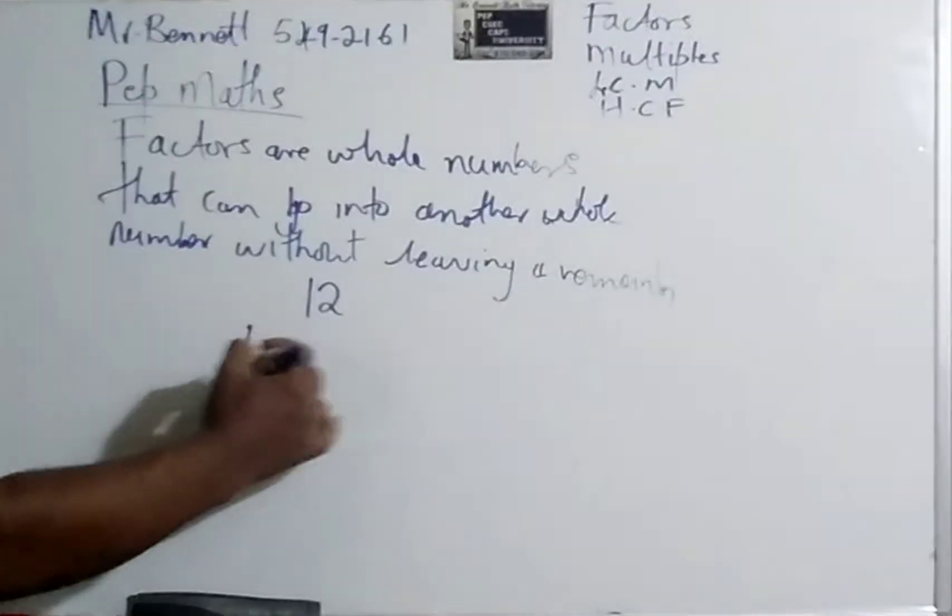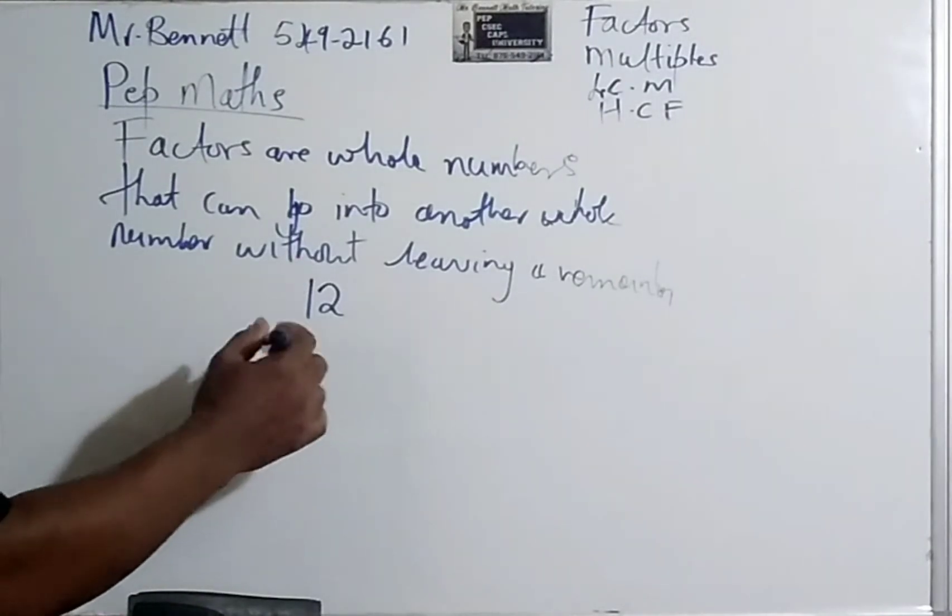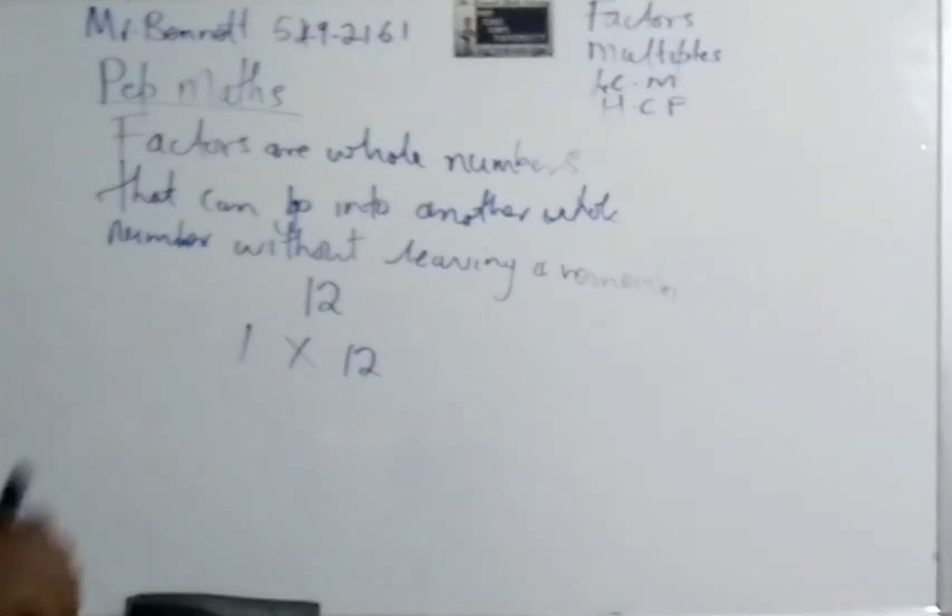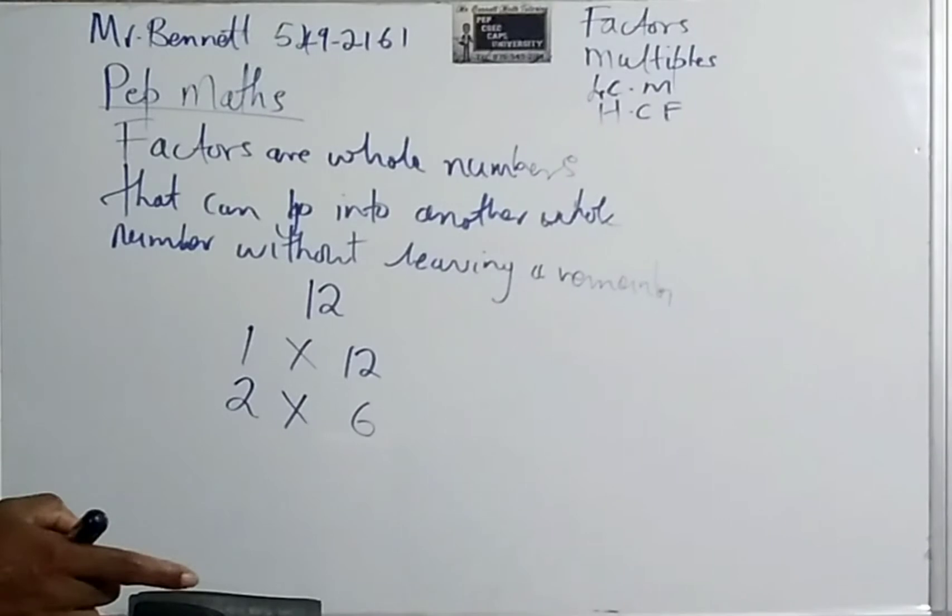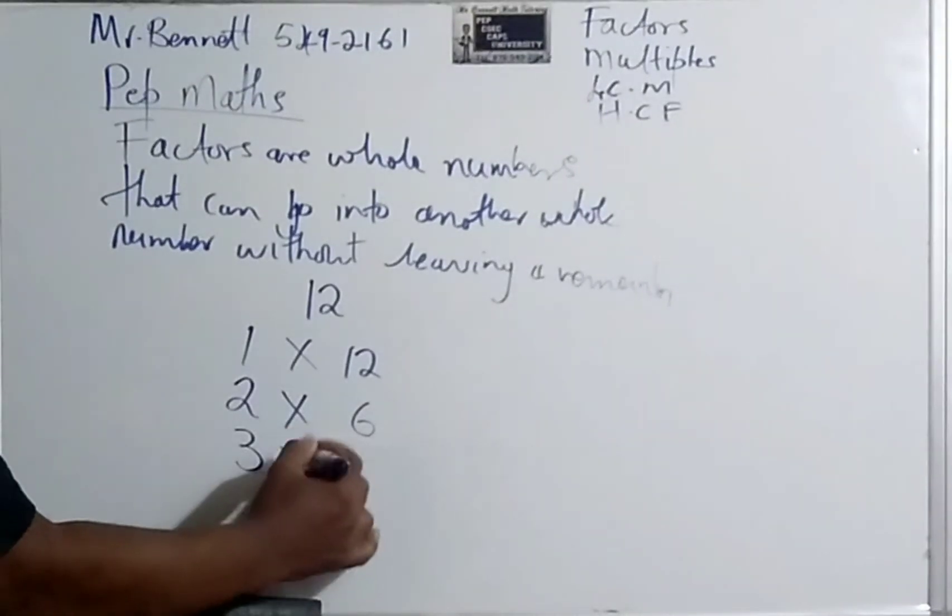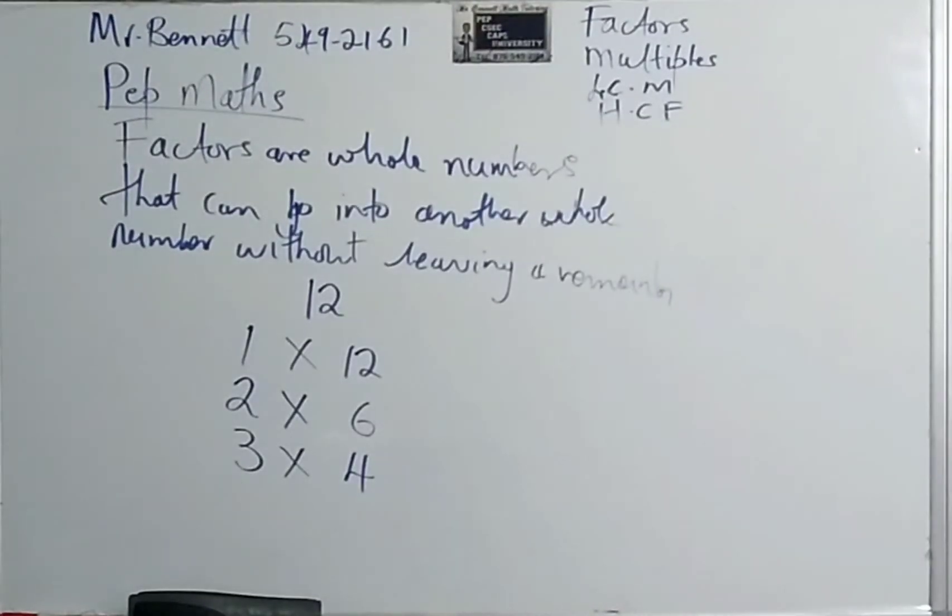So let us take 12 for example. I'm going to list all the factors of 12. An easy way to do it is to know that you must multiply a number to get it. To get 12, it will be 1 times 12. Ask yourself, can 2 go into 12? Now 2 can go into every even number. So 2 times what gives you 12? 2 times 6. Can 3 go into 12? And how many times? So that will be 3 times 4. Can 5 go into 12 without leaving a remainder? No. So therefore 5 is not a factor. So remember, factors are numbers that can go into it without leaving a remainder.